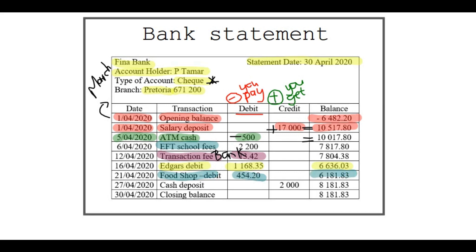Then there was a cash deposit on the 27th of April. This cash deposit was a credit amount, so we add that amount and get 8,181. He went and put cash in at an ATM or at the bank itself.